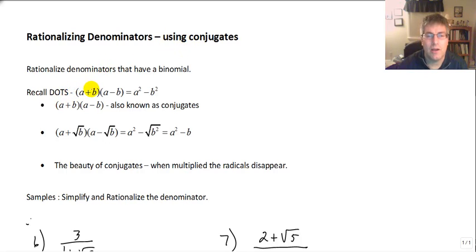So recall what our conjugates are. Our conjugates are really a difference of two squares. a plus b times a minus b multiplies out to a squared minus b squared. So if we have a square root or radical as a or b, when we square it, that's going to eliminate the radical.